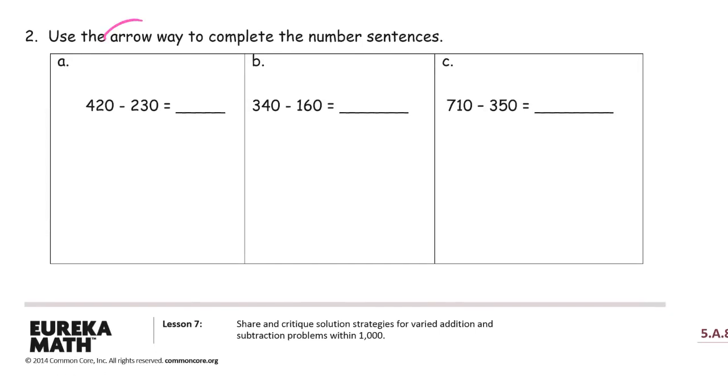And now it says we've got to use the arrow way to complete these number sentences. So we've got some subtraction here. 420. And I'm going to subtract the 100s first. 220. Then we have 220. We ran out of room there. 220. And I still have to subtract 30, so I'm going to subtract 20 first, because that's going to get me to 200. And then 10 more. 190.